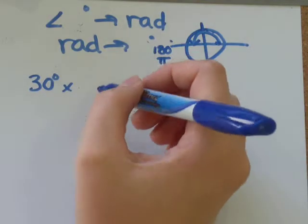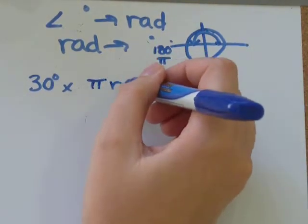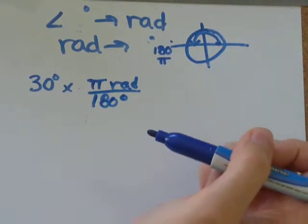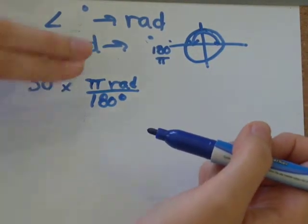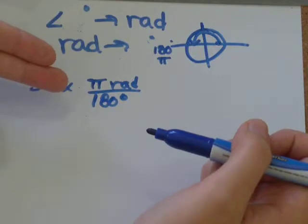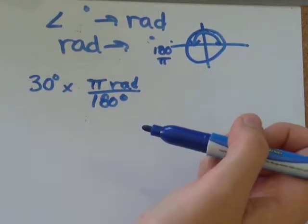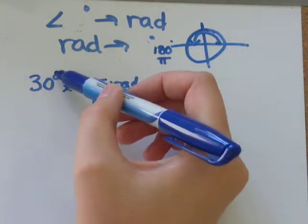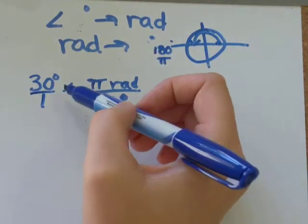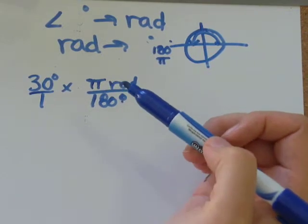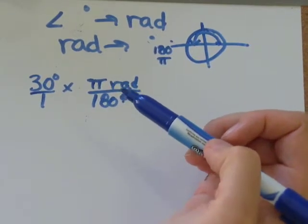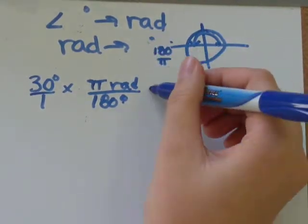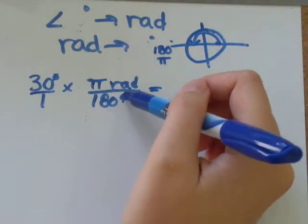So I'm going to multiply by pi radians over 180 degrees. If I had multiplied by the reciprocal of that—180 degrees over pi radians—this won't work, because we need degrees on the bottom to cancel out degrees on the top of the fraction. 30 degrees, if you want to put that over 1, they need to cancel out. So when I do this, they'll cancel out because I put it on the bottom.